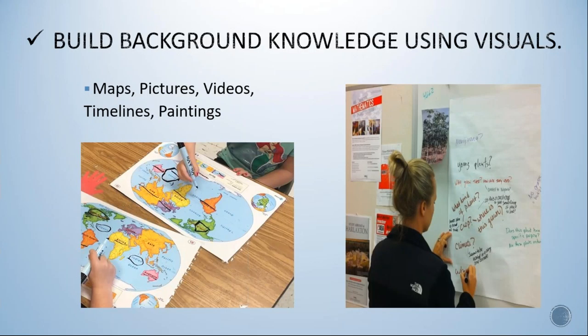One of our strategies is to use visuals to build background knowledge. One of our barriers was that sometimes there's just not enough background knowledge or context to understand content. This seems pretty simplistic, but sometimes we forget in the craziness of school that it always helps to start with visuals anytime you can. Those visuals could be maps, pictures, videos, timelines, paintings — any type of thing to build background knowledge. In literacy, we call it activating schema: making connections to previous learning.